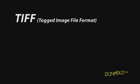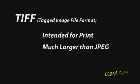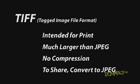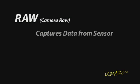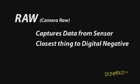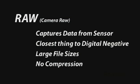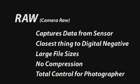The TIFF option is often intended for printed output. TIFF file sizes are much larger than JPEGs and no compression is applied. If you want to share files online, you probably want to convert them to JPEGs. The RAW file format captures data from the camera's sensor. It's considered the closest thing to a digital negative. RAW files are very large because no file compression is applied. The RAW format gives you total control over your photos.